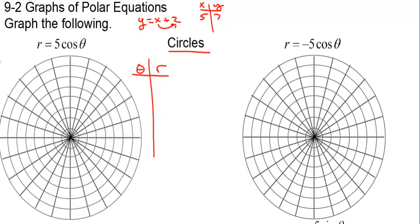We need to decide what we're going to pick for theta. To do that, we take the coefficient of theta, multiply it times 2, and count by pi over 2's. But this graph will finish in pi radians, so we only have to go to pi, counting by pi over 2's: 0, pi over 2, and 2 pi over 2, which is pi. We're only going to use 3 points to graph these, but we just have to know that these are circles.